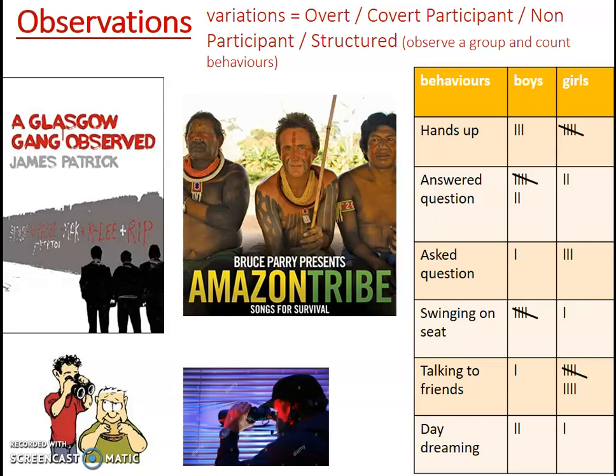Overt observation is when the participants know they're being observed — they're aware they're being studied. One of the big issues with overt is people will change their behaviour when they know they're being watched. You can have overt participant observation and covert participant observation. An example of overt participant observation is Bruce Parry with the Amazon tribe.